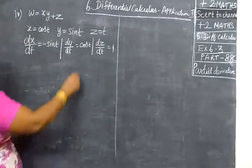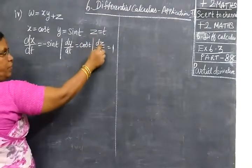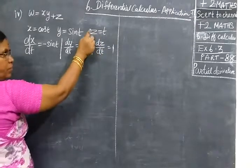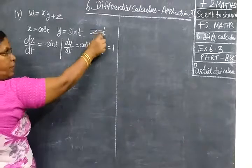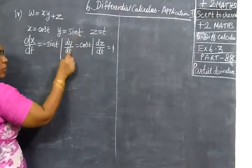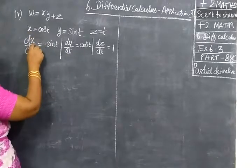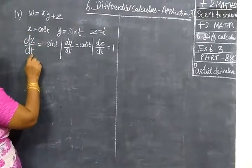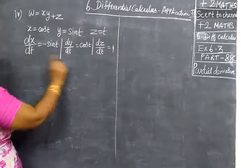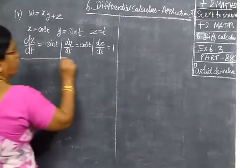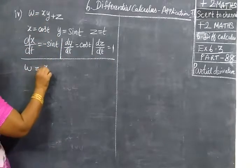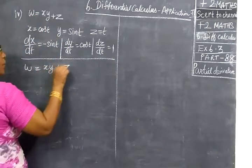Now, we see the differentiation with respect to the variables. Differentiation of w with respect to t. This variable is equal to t. Next, we are finding for w. w equal to xy plus z.